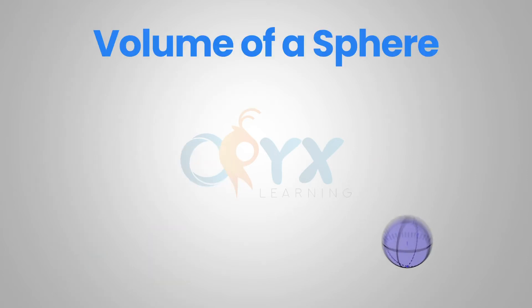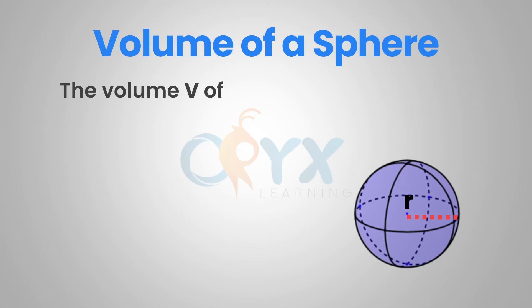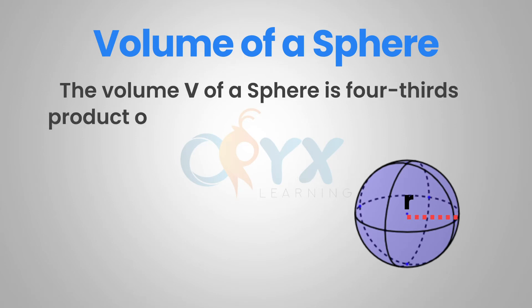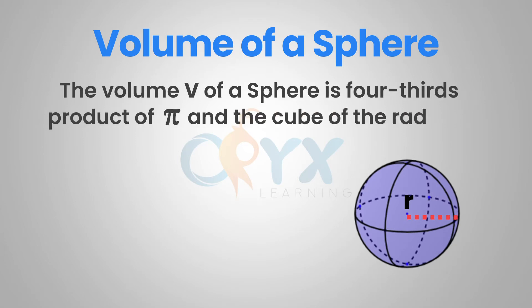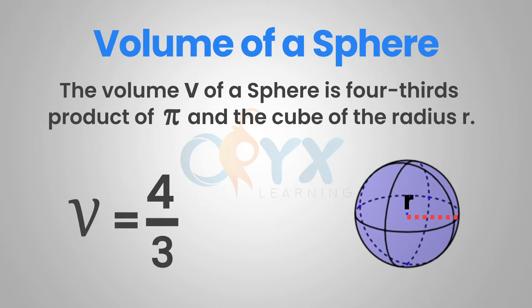The volume v of a sphere is four-thirds the product of pi and the cube of the radius r. So our formula is v equals four-thirds pi r cubed.